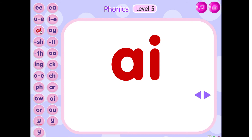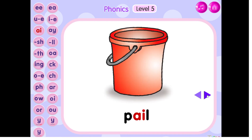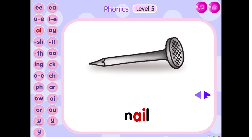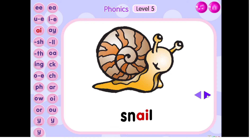The sound of ae is ae. P, ae, l, pale. T, ae, train. N, ae, l, nail. Sn, ae, snail.